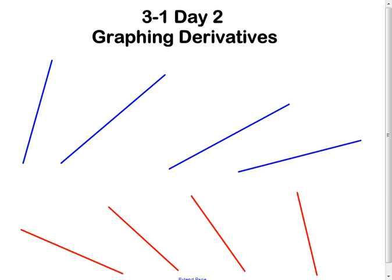For you to graph the derivative, it's important that you can estimate slope. First of all, you have to know if it's positive or negative, and then give it some kind of estimate. The first thing you should realize is when you have a graph that's like 45 degrees, you need to know that has a positive slope.